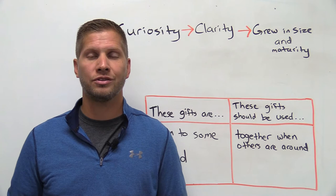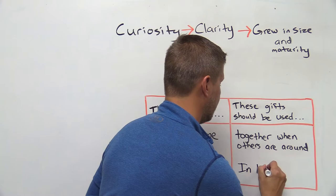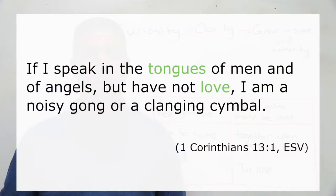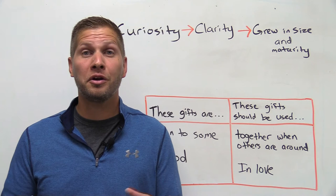The next thing that we see about using the gifts is that these gifts should be used in love. Paul says, If I speak in the tongues of men and of angels but have not love, I am a noisy gong or a clanging cymbal. The next time you hear this Bible verse quoted at a wedding, you can think to yourself, that's about the spiritual gift of speaking in tongues. We often skip over that and just focus on the word love. But here Paul says, If you have the spiritual gift of speaking in tongues, make sure you use it in love.